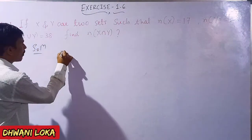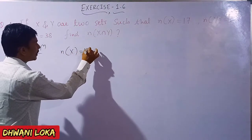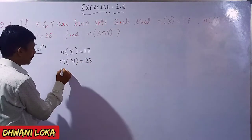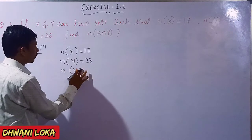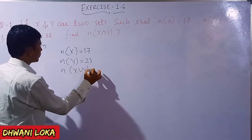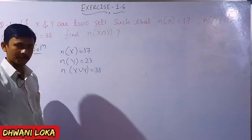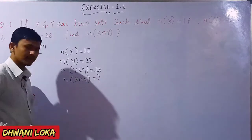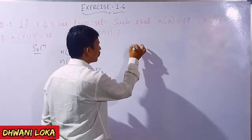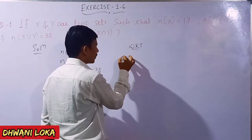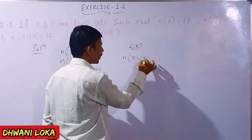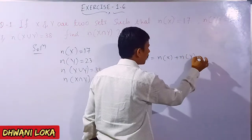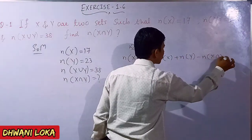Given: N of X is equal to 17. N of Y is equal to 23. N of X union Y is equal to 38. We know that the formula is: N of X union Y is equal to N of X plus N of Y minus N of X intersection Y.